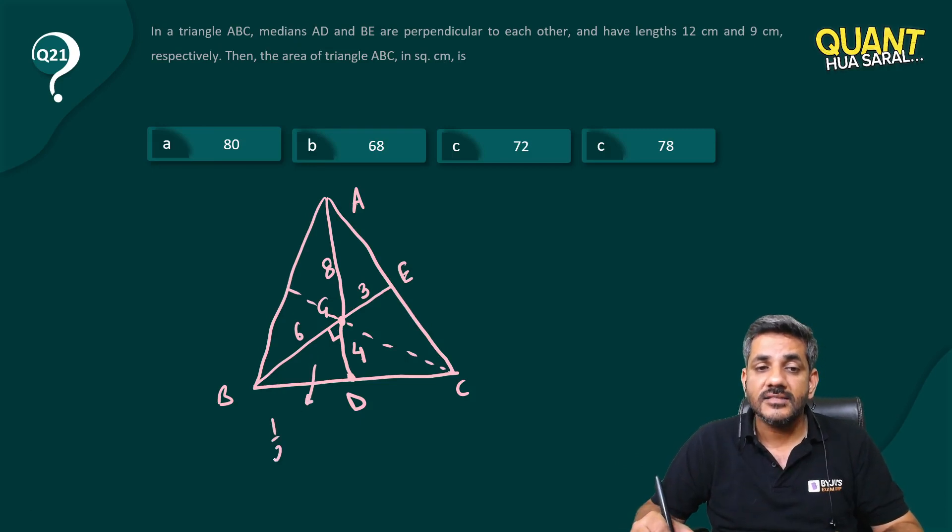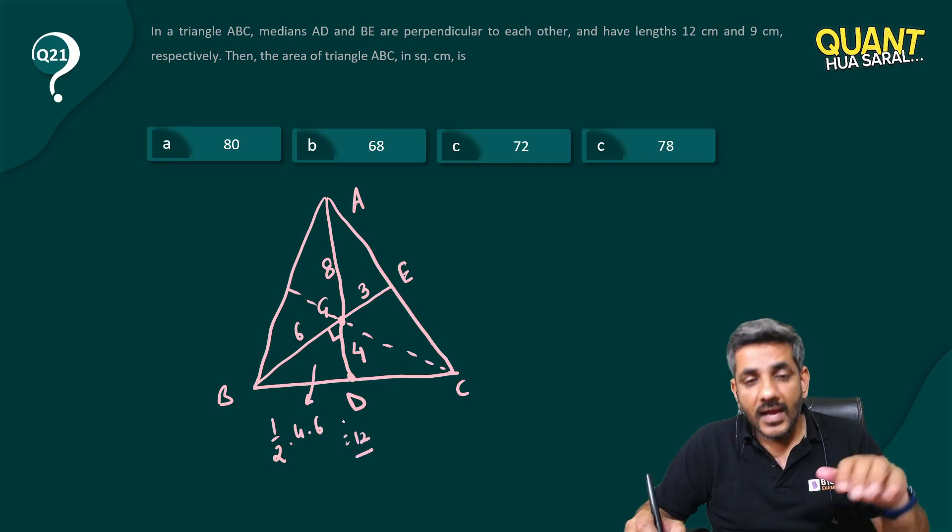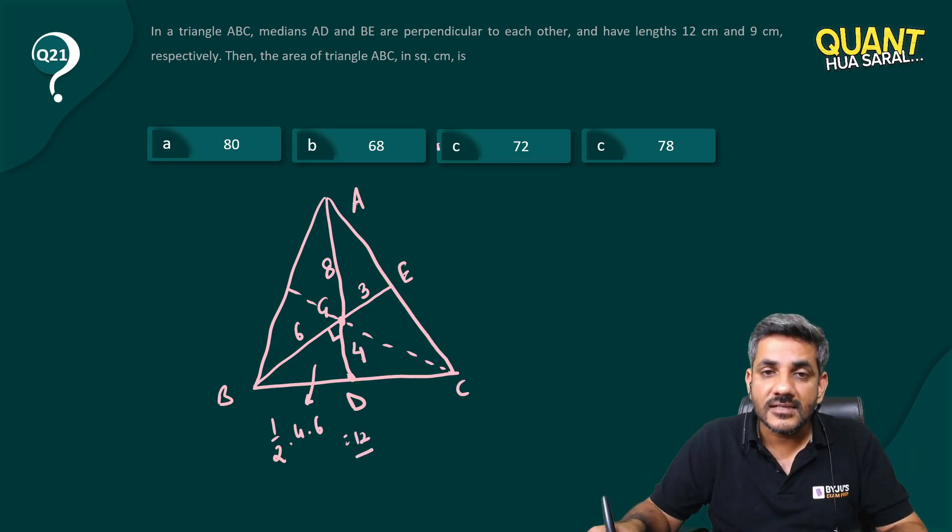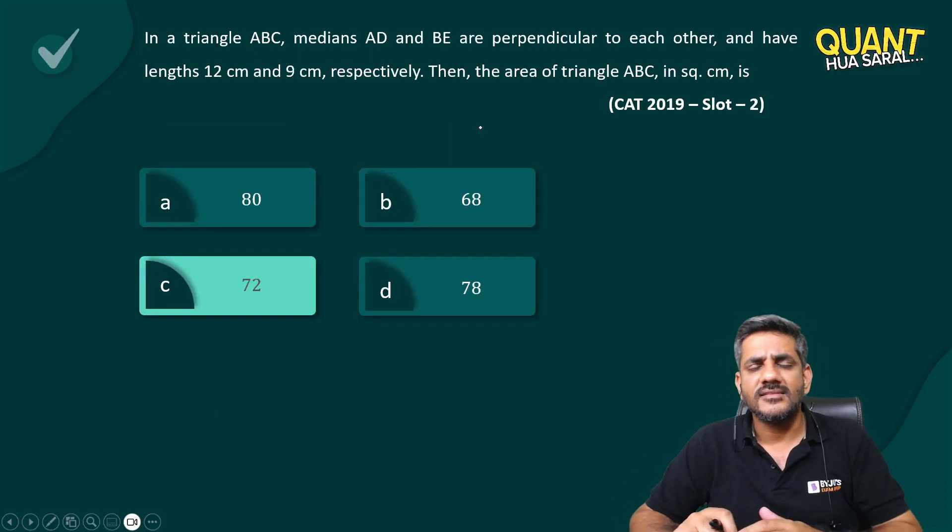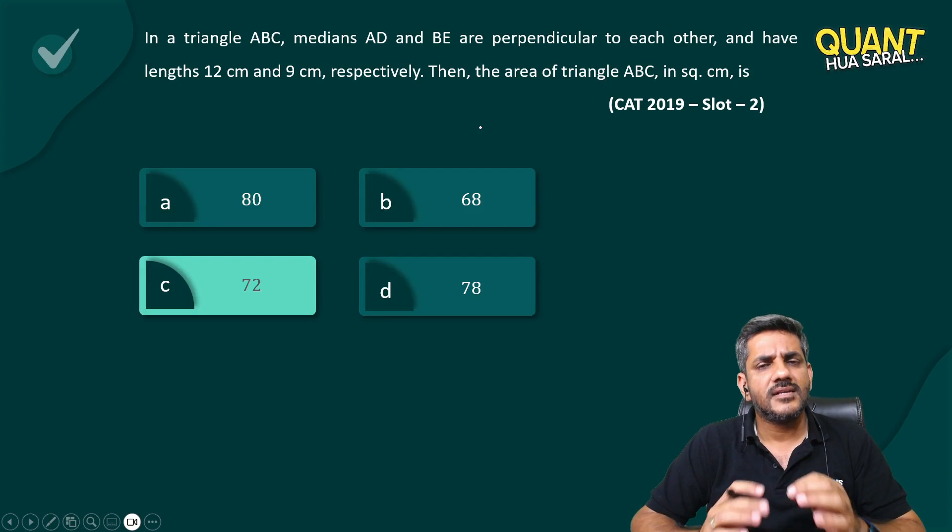So area of one such triangle is half of base into perpendicular, that is 12. And there are six such triangles. The answer is option C, 12 into 6, 72 is the right answer. Pretty easy question.